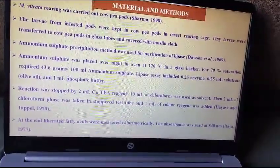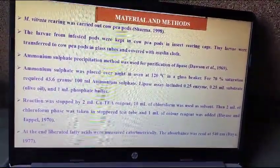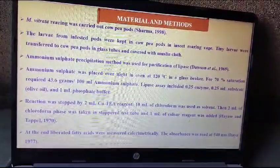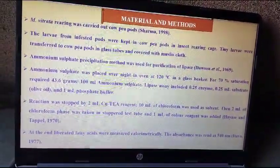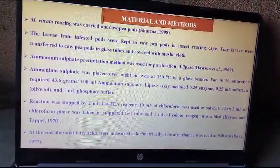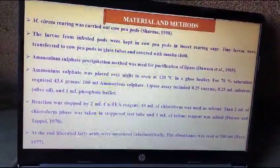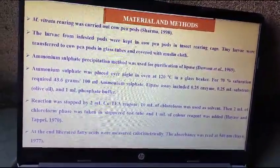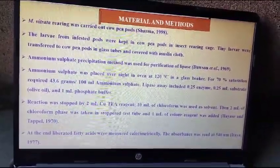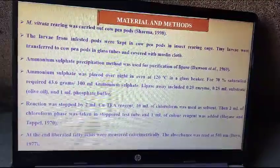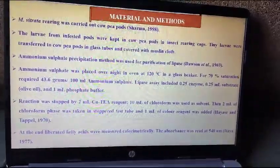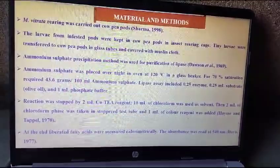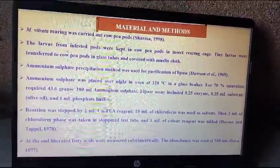Materials and Methods. Maruka Vitrata rearing was carried out with cowpea pods. The larvae from infected pods were kept in cowpea pods in an insect rearing cage. The tiny larvae were transferred to cowpea pods in glass tubes and covered with muslin cloth.